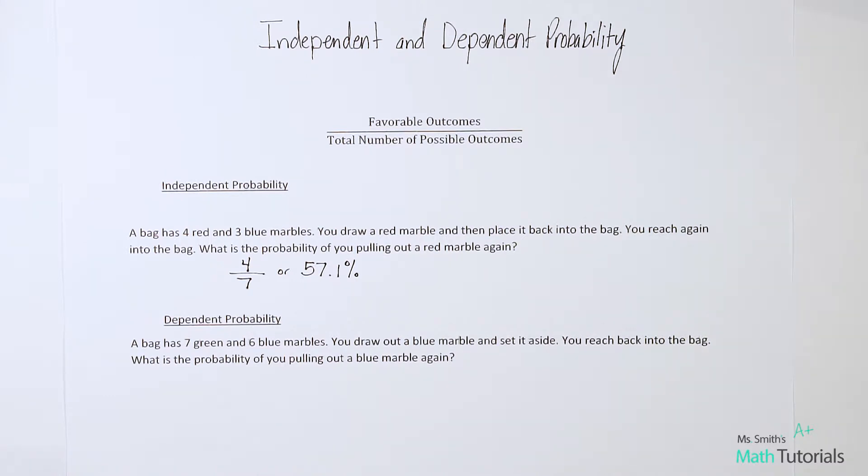The key feature here that made this independent probability is that we took out a marble, but we put it back. So we had the same amount of marbles to start with as we did once we had actually pulled a marble and then put it back. Now let's look at dependent probability.